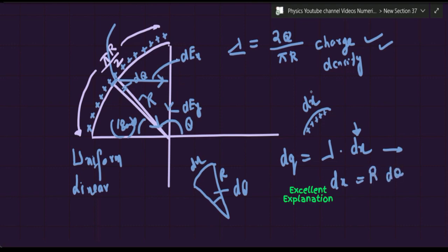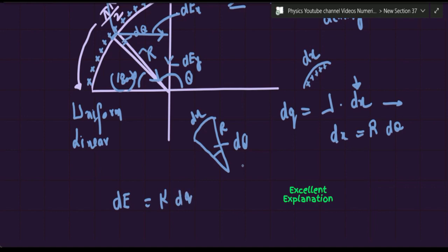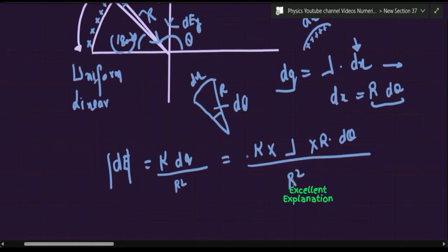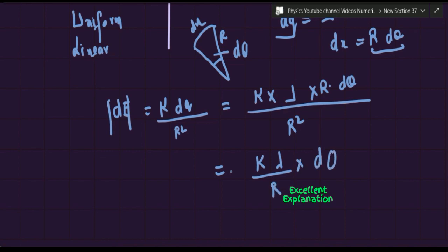Our focus is magnitude right now, so direction is the second part. This will become k multiplied by dq, where dq = λ · dx = λ · r · dθ, divided by r², giving dE = kλ/r · dθ. This is straightforward standard integration. So this is your small electric field, directed radially towards the origin. So far we are focusing on magnitude and integration. The second part is that the electric field is a vector quantity, so we must apply vector algebra.